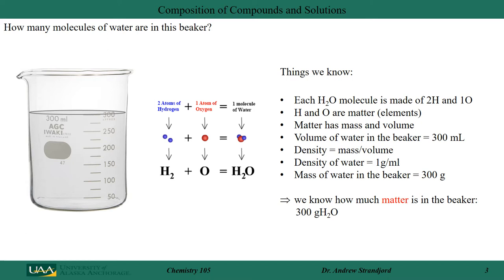Let's start off with a question: how many molecules of water are in this beaker? Here are some things we know. First, each water molecule is made of two hydrogen atoms and one oxygen atom. Hydrogen and oxygen are matter. Matter has mass and volume — that's the definition. This beaker has a volume to it, and we can read that off the beaker. The volume of water in the beaker is 300 milliliters.